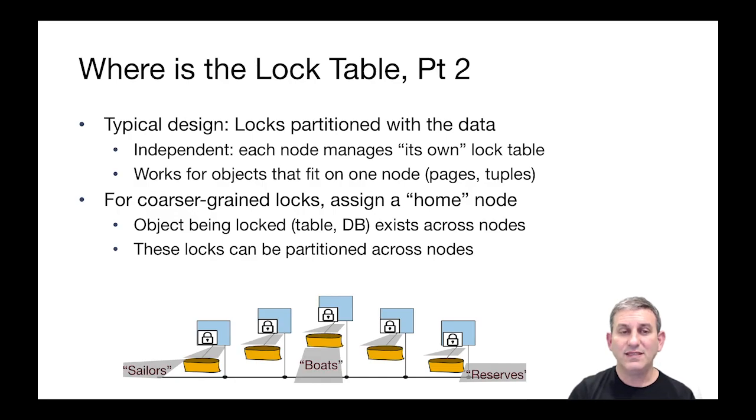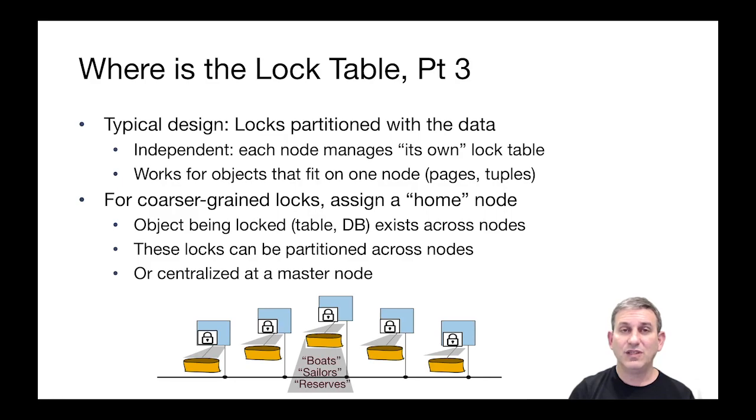In one scenario, these locks, like locks on table names, can be partitioned across the nodes. Maybe they're hash partitioned or round robin partitioned, so that different tables are the responsibility of different nodes for locking. Or you can have all of the global locks on a single machine, and that machine is responsible for all global locks. Really, this is a decision that doesn't matter a lot unless you have a great many of these locks for global objects.